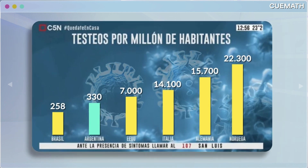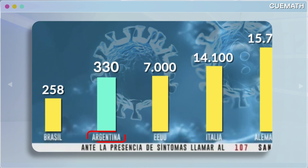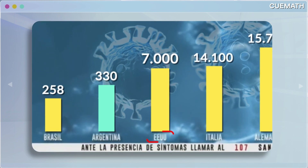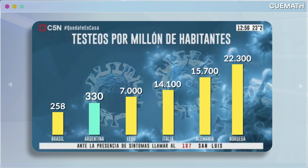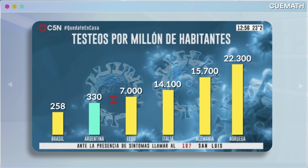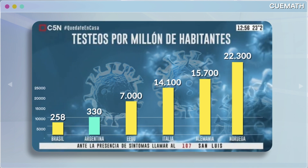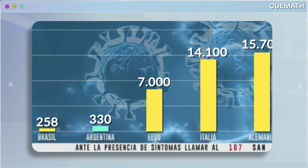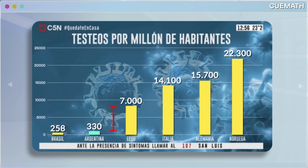Another example: a graph from Argentina showing COVID-19 tests per million. It suggests Argentina's testing is close to that of the USA. The actual numbers? 330 for Argentina, 7,000 for USA — 20 times more. But the visual difference? Minimal. Plotted correctly, this is how it would look — Argentina clearly exaggerating its testing efforts.